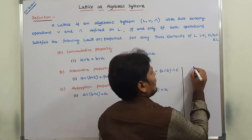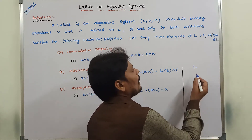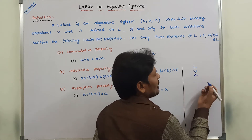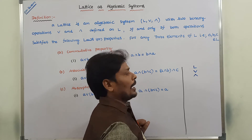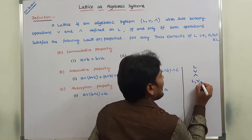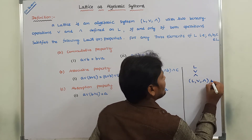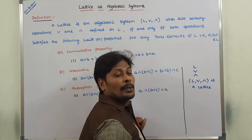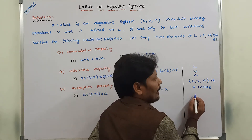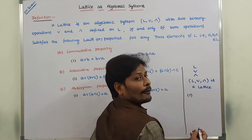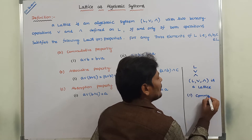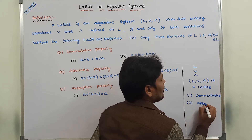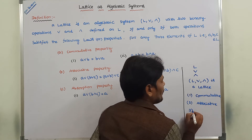Let us consider L is a finite set. On that finite set, we are performing join operation and also meet operation on the elements of L. Then L with join operation and meet operation is a lattice. This lattice is said to be an algebraic system if and only if it satisfies three properties. First property is commutative property, and the second property is associative property.